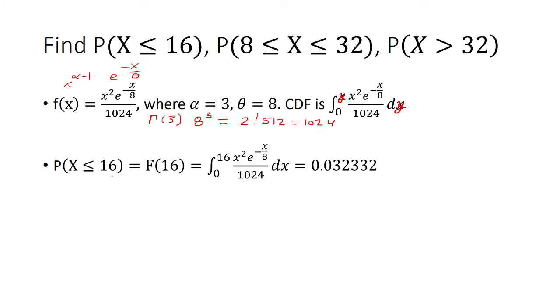So for us, we want to find the probability that x is less than or equal to 16. So 16 is going to be the upper limit here, and then we'll be integrating this density function. When we do that, we get 0.032332.